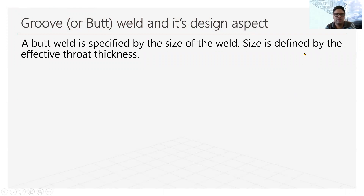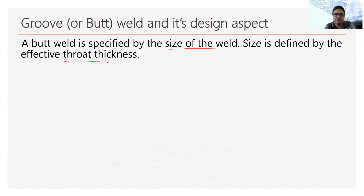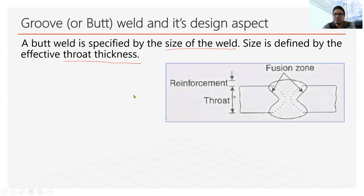A butt weld is specified by the size of the weld. We have seen size of the weld in the fillet weld case. Now we will see the size of weld in case of groove. This size is defined by the effective throat thickness. Generally, the size of throat thickness is equivalent to the size of the weld, and we will see that using this diagram.